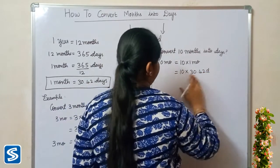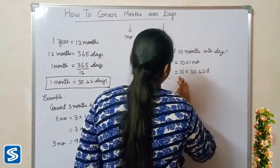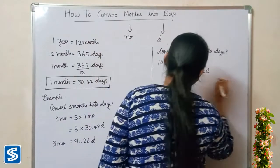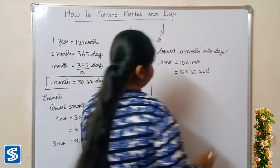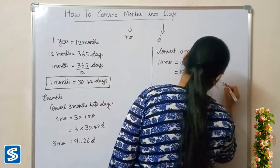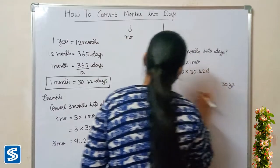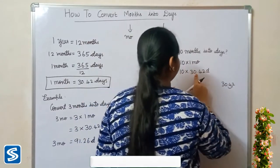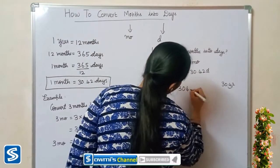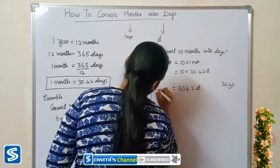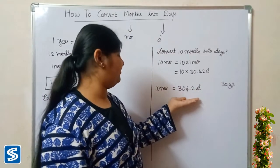The easy way to multiply a decimal number with 10 is to move the decimal point one place to the right, because 10 has only one zero. So when we multiply 10 with 30.42 days, our answer will be 304.2 days. So 10 months is equal to 304.2 days.